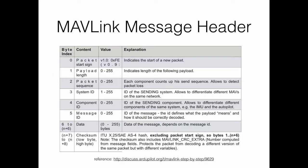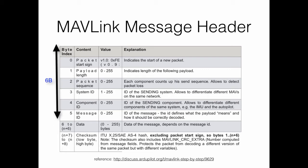All MAVLink messages contain a header appended to every payload of the message. The header contains information about the message, and the payload contains the data carried by the message. The total MAVLink message has a length of 17 bytes, which includes 6 bytes for the header, 9 bytes for the payload, and 2 bytes for the checksum. The checksum is intended to verify the integrity of the message and that it was not altered during transmission.